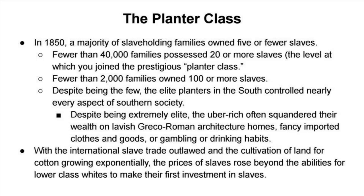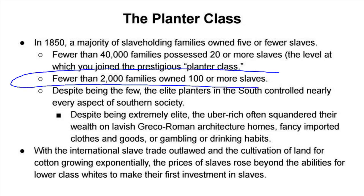The planter class required owning twenty or more slaves — fewer than forty thousand families qualified. Although forty thousand seems like a large figure, it actually demonstrates just how entrenched the slave system was in the south that it's not that big a number. Fewer than two thousand families owned one hundred or more slaves — these are your Bill Gates, Jeff Bezos types. Those with twenty or more slaves were very wealthy and living more than comfortably, but not quite as elite as those owning a hundred or more.